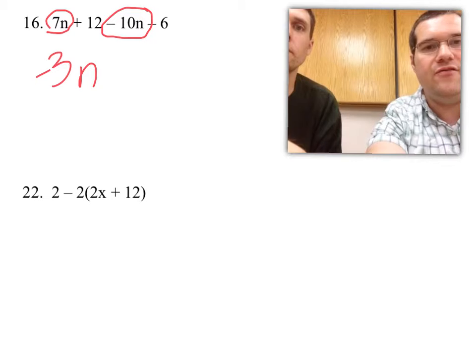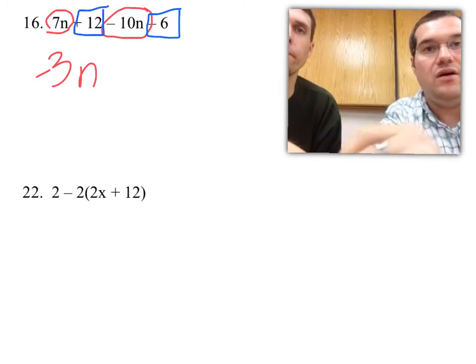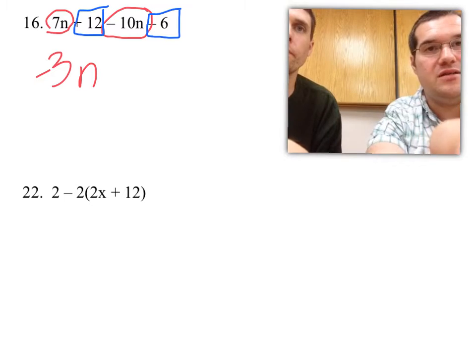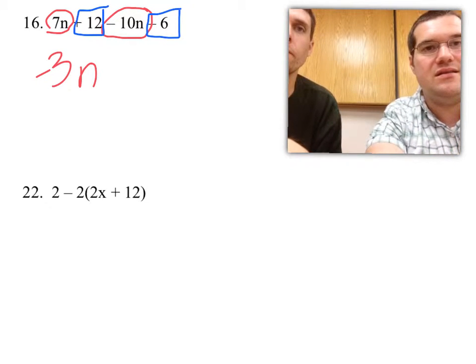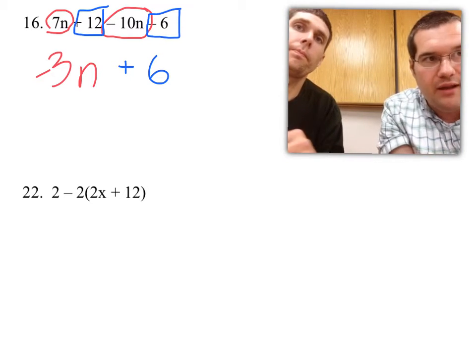Alright, and I'm going to use a different color. And usually what I do is I box my numbers in. I can see that I have a positive 12 and a negative 6. Once again, the signs are different, so I'm going to subtract. 12 minus 6 is 6. And there's more positives, so it'd be negative 3n plus 6.